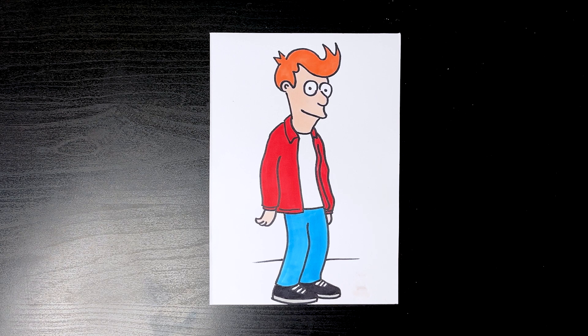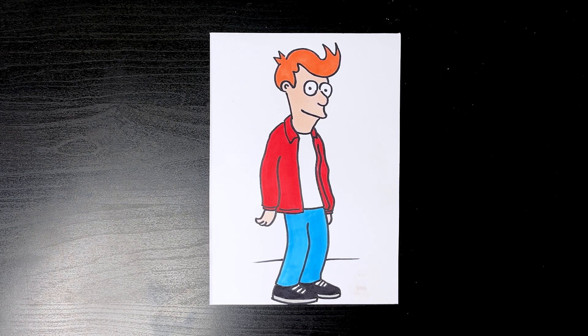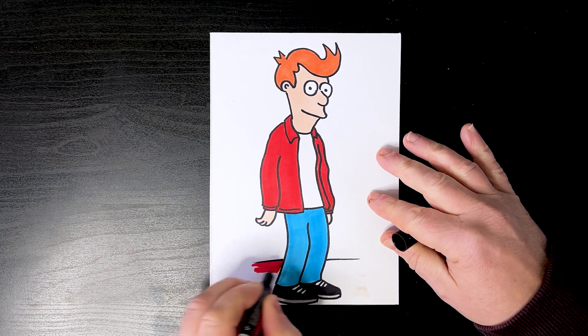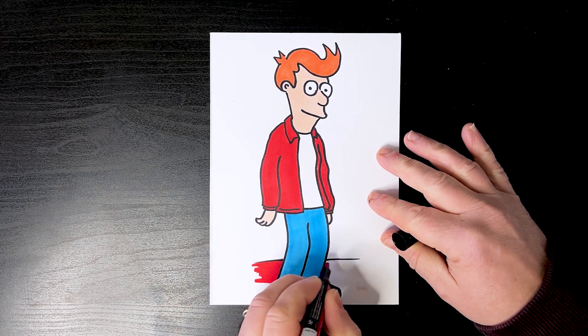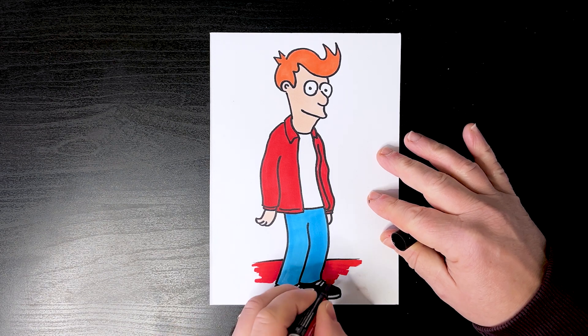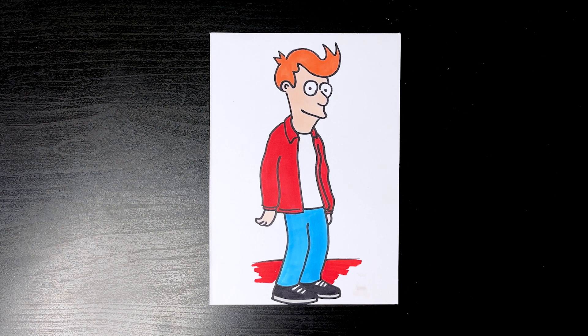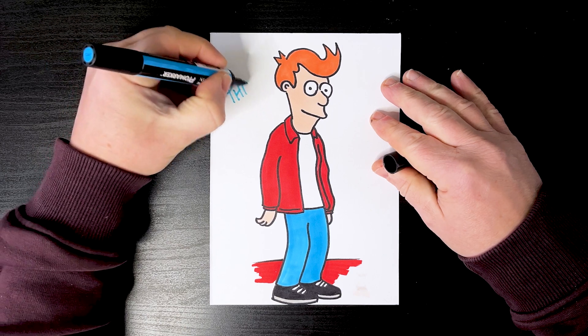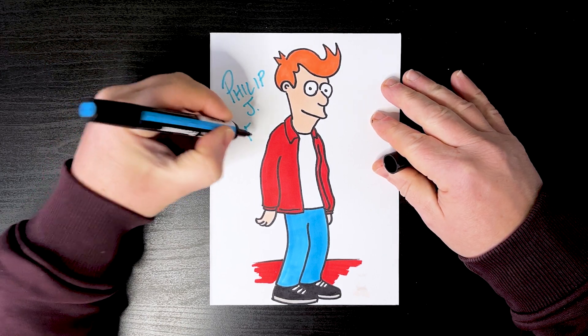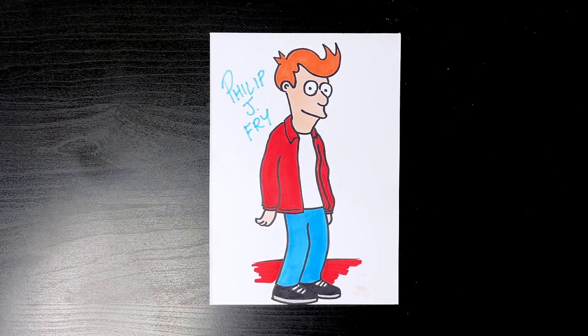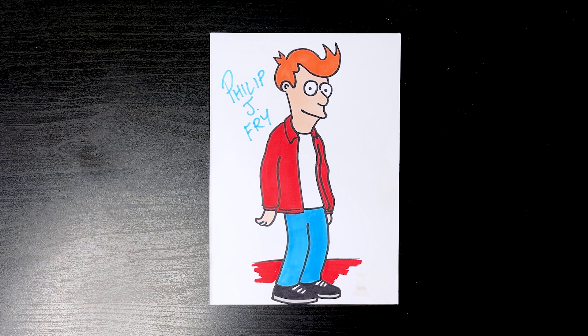Then let's just put one on the background. Grab that red again, just put a bit of color in to show he's like standing somewhere. And then we've done Philip J. Frye from Futurama. Thanks for watching Art Draw. Bye.